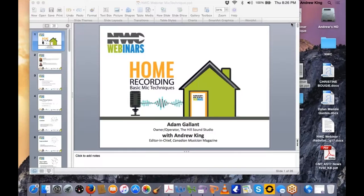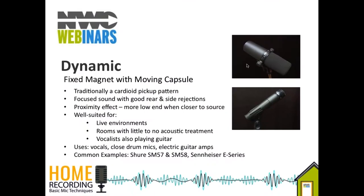Next are the different types of microphones: dynamic, condenser, and ribbon. The Shure SM57 and SM58 are very common examples of dynamic microphones. A microphone is a transducer — it takes changes in air pressure and translates that into voltage. With a dynamic microphone, there's a fixed magnet, and as you talk into it a plate moves at different speeds depending on the frequency, and that gets translated into voltage.